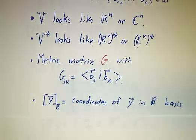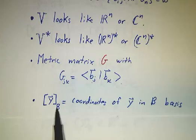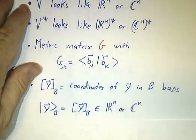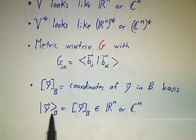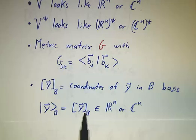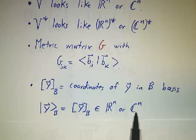The point of having a basis is to take coordinates. You can take the coordinates of y in the b basis, and that gives you a column. When we say the coordinates of a ket, we mean the coordinates of the vector, and that's a column. Coordinates give you columns.